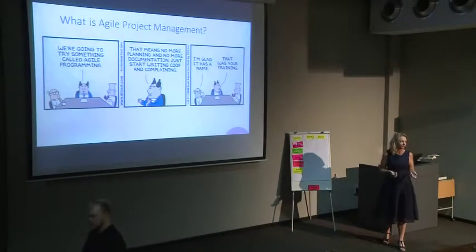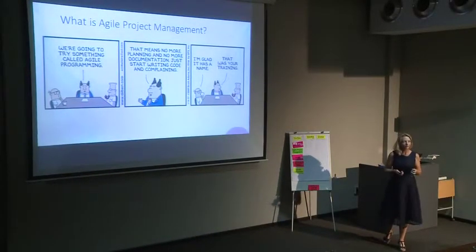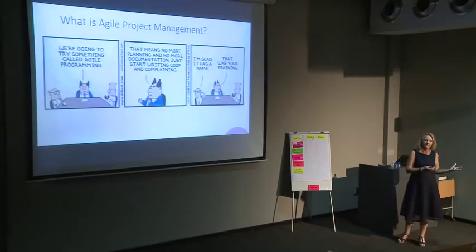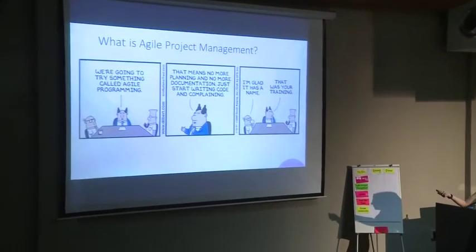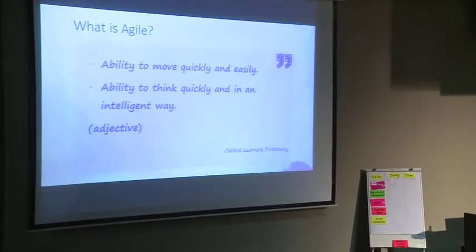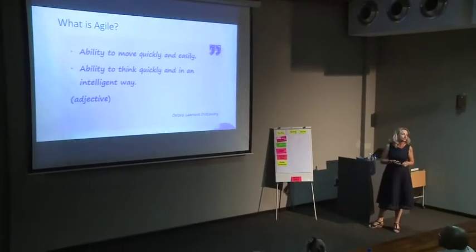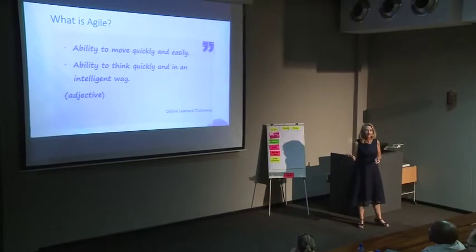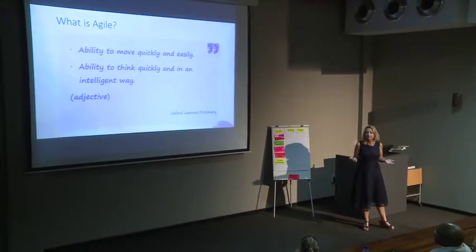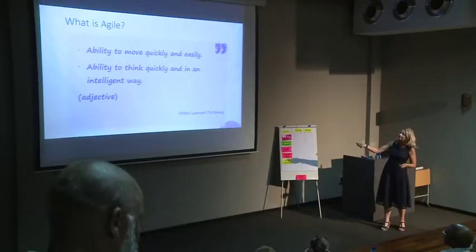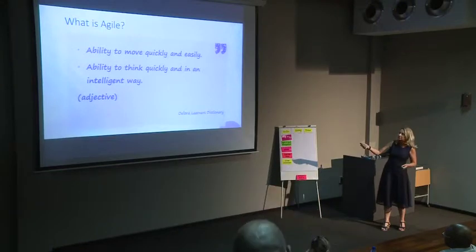A lot of people think that Agile means no documentation. In a way we don't have five lever arch files for every project, but there is still documentation, especially in the beginning when you're trying to understand what the business wants. Agile is an adjective meaning to move quickly and easily and to think quickly in an intelligent way. With my first project, it took three years to implement a system — by that time the business had changed, their needs had changed. That was just too slow, especially for IT projects.